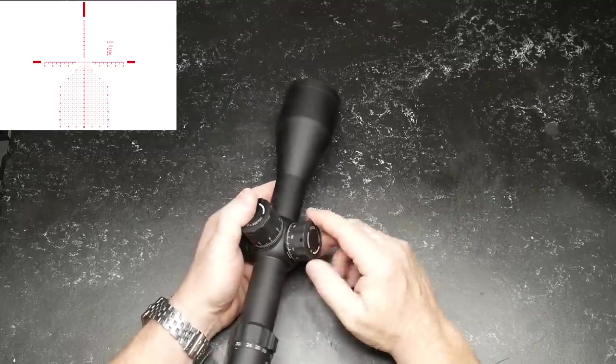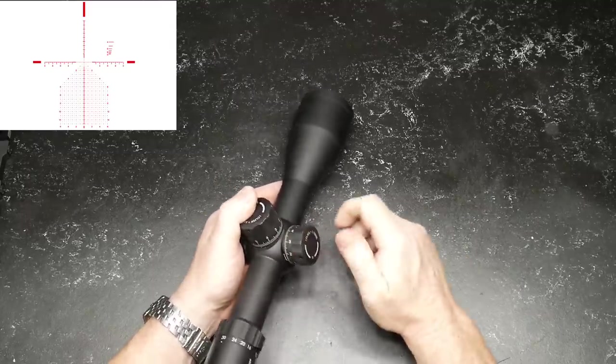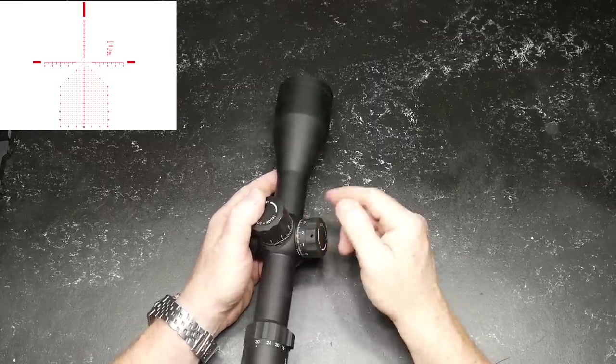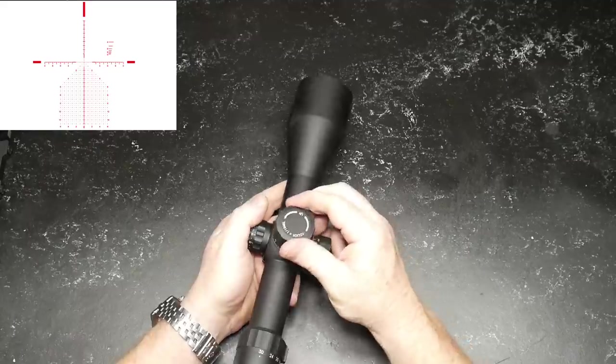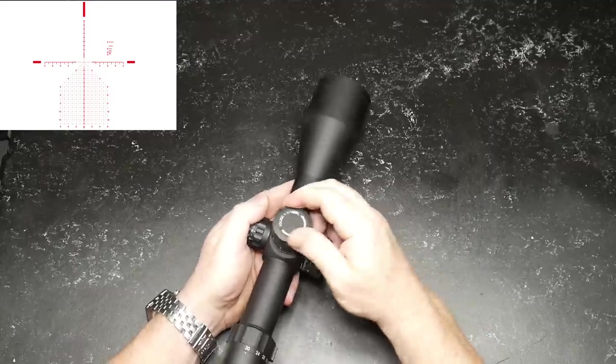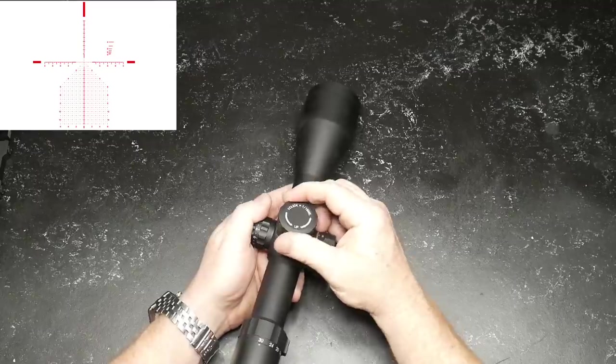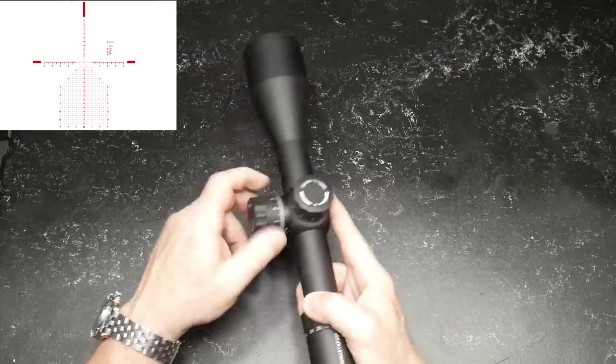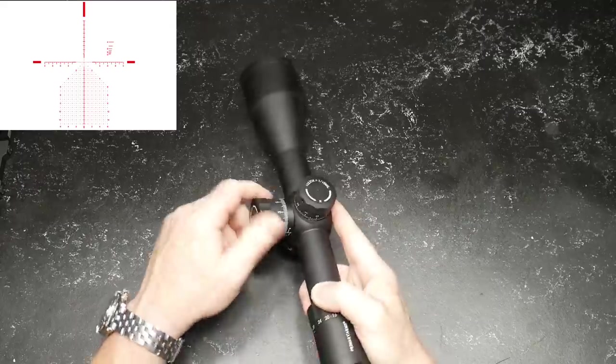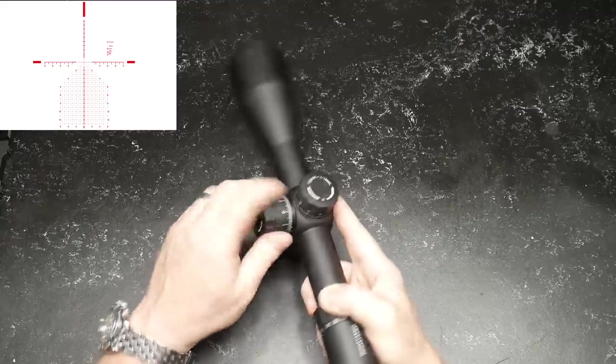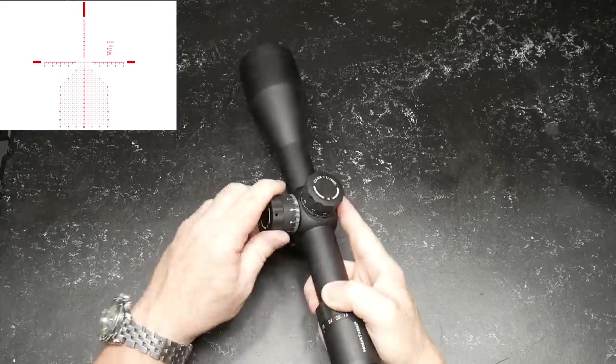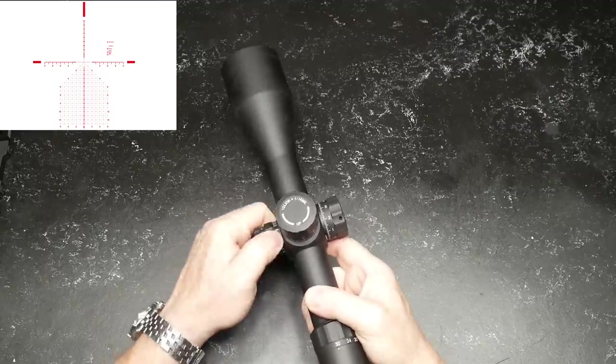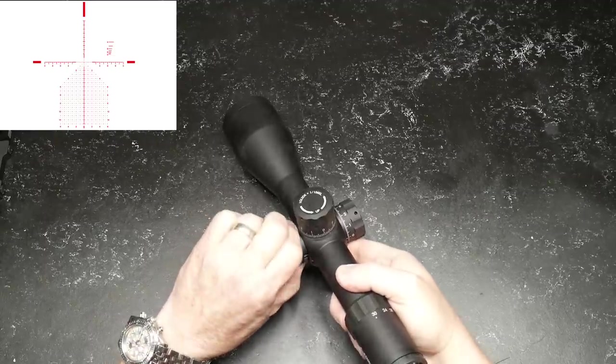On the left side, we've got the windage knob right here. You've got 13.1 mils of movement in the windage knob. The nice thing also is in the elevation knob, you've got 27 mils of movement just in the elevation knob itself. One of the cool things is you can bring this thing back down and zero it out. We'll do that here in a second.